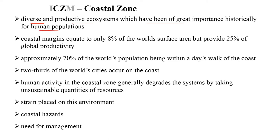The coastal zone is diverse and productive, which has been of great importance historically. From the very beginning of human population, the first source of economy and transportation was sea transportation. Almost 70% of the world population lives within a day's walk — about 100 kilometers — from the coastline. Yet the coastal zone covers only 8% of world land area, but provides 25% of global productivity.